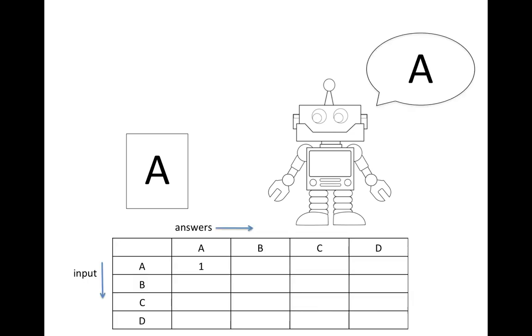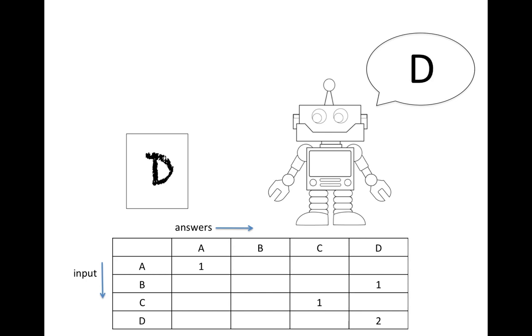Let's suppose you built a robot to answer an alphabet in front of him. Every alphabet the robot will answer, and you will fill out the table below with his answer. Here the robot answers A for alphabet A, so we put one at row A and column A. Here the robot answers D for input B, we put one at row B, column D, and we repeat this step until finishing.